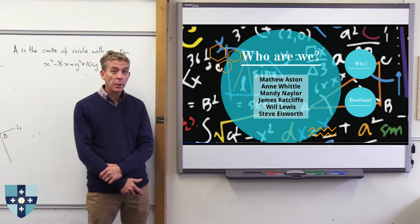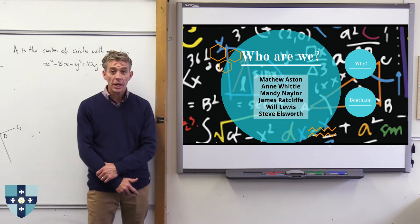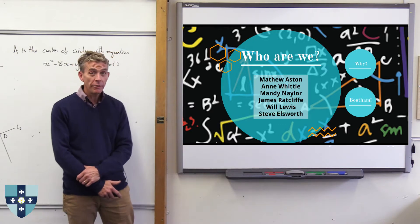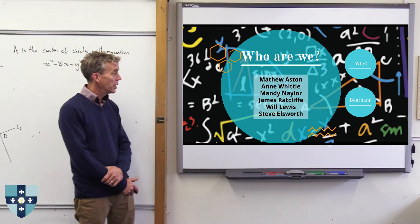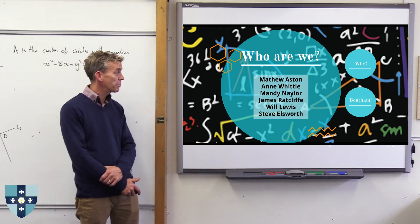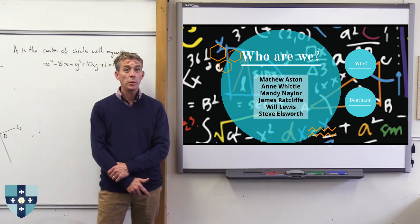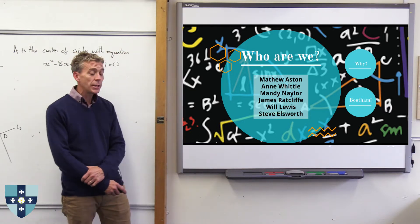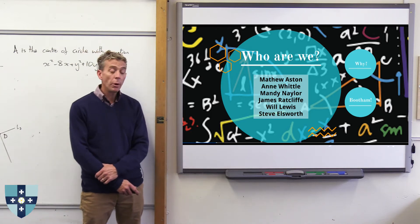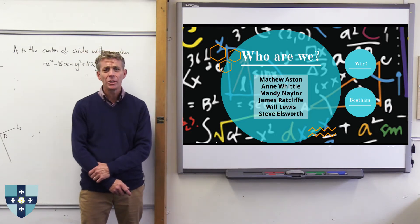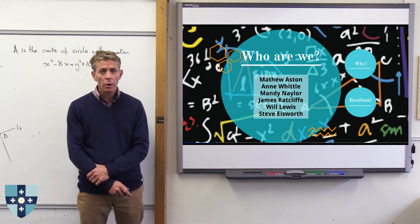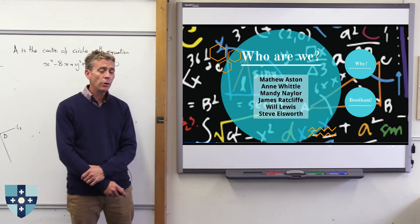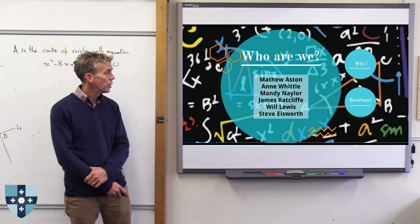We've got Anne Whittle, she used to be a head of department, head of maths at a previous school so she's got all that experience. Mandy Naylor, she was head of maths at her previous school before she came here. James Ratcliffe, he was head of maths at this school before I was and Will Lewis, he was head of maths before James Ratcliffe. Steve Ellsworth is yet to be head of maths but I'm still working on him to try and persuade him. Anyway, so that's the experience we've got there. Means that if you are studying A-level maths and you have a problem with the work that's being set or a question that you've got in your preps, then pop along to the maths department office and if there's someone there, they are going to be able to help you. You're not relying on just finding your maths teacher. Any of us will be able to help with those things.